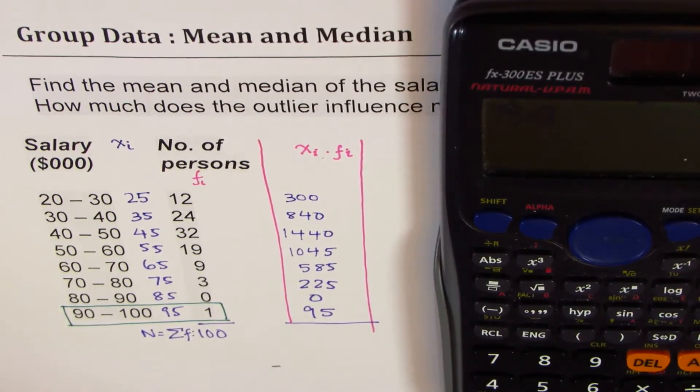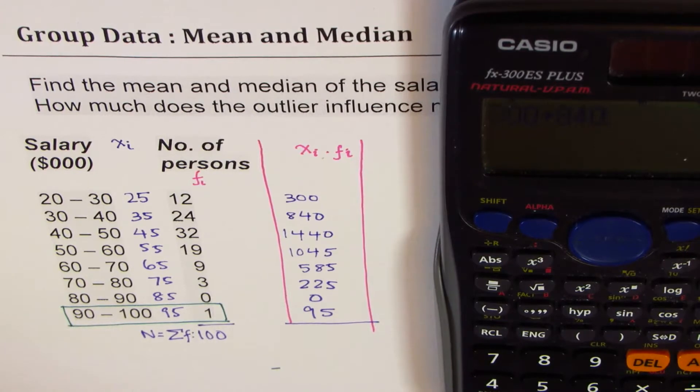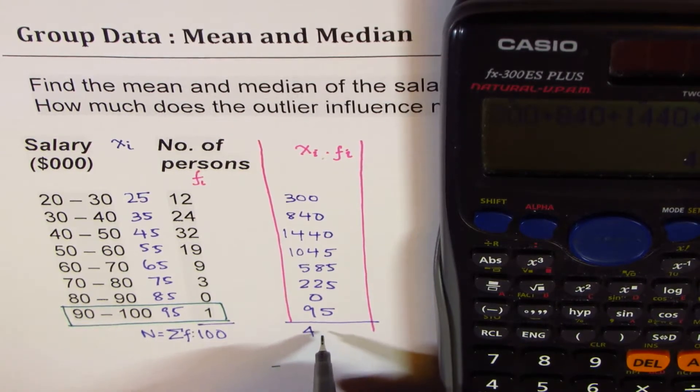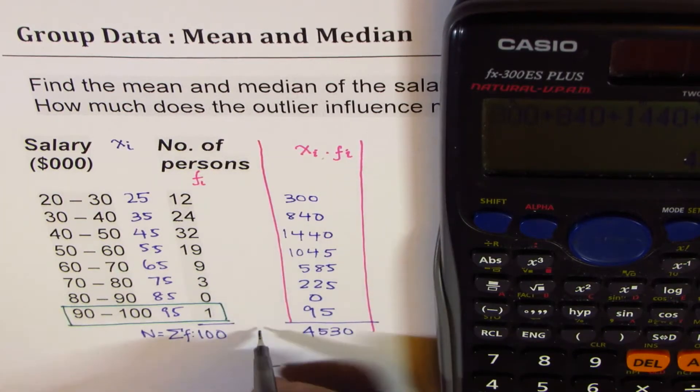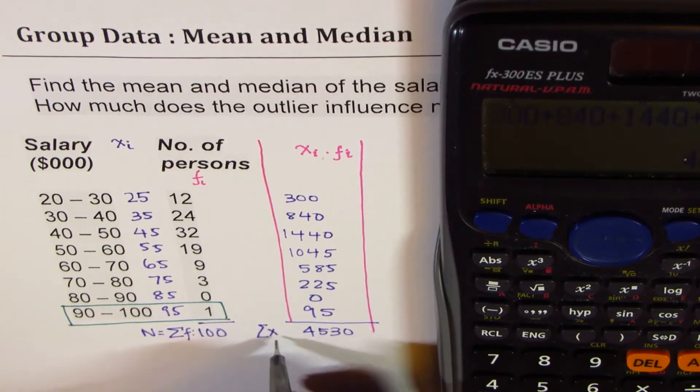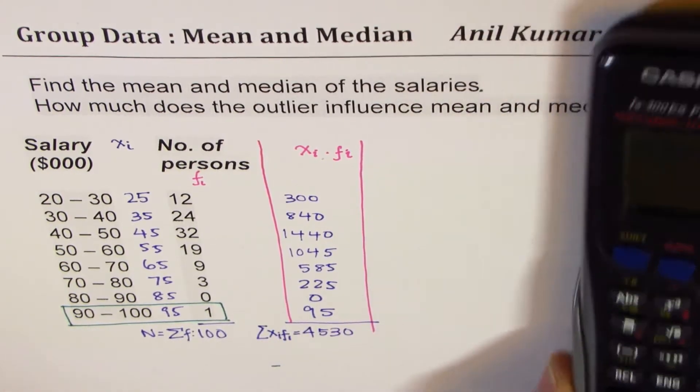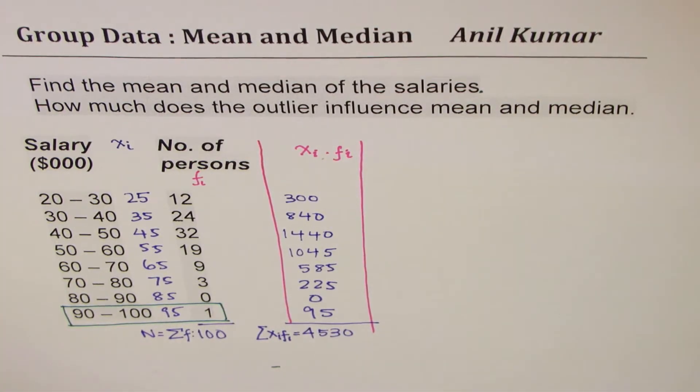Now let's add them up: 300 plus 840 plus 1440 plus 1045 plus 585 plus 225 plus 85 plus 95, which gives us a value of 4530. So that is sum of XIFI. Now this helps us to find the mean clearly.